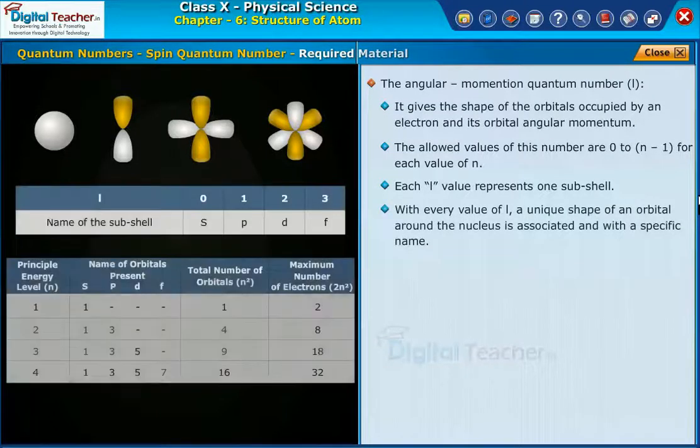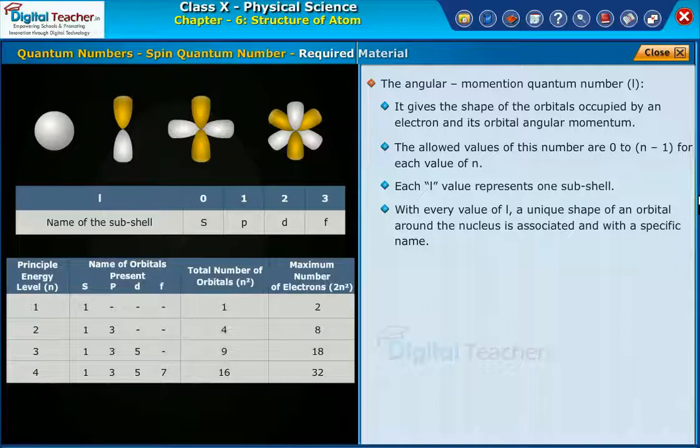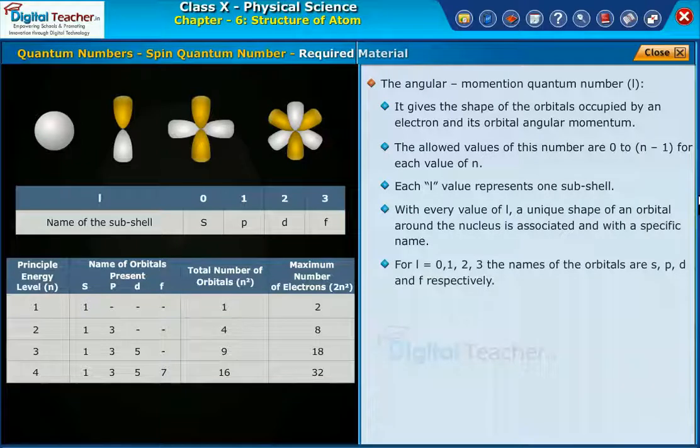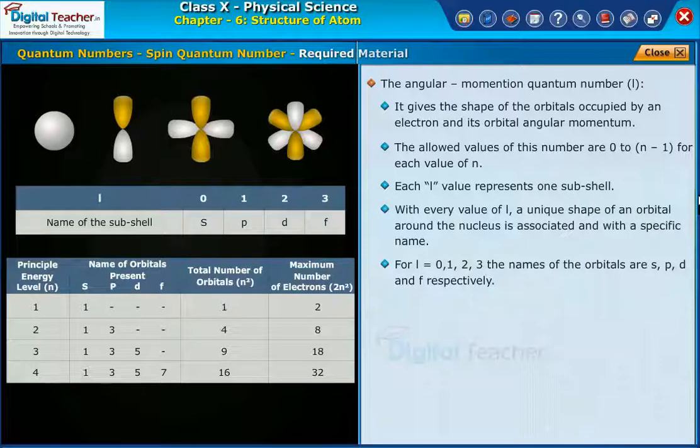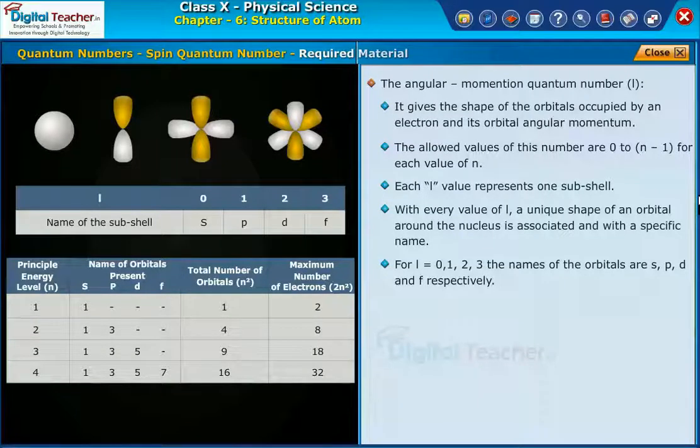With every value of l, a unique shape of an orbital around the nucleus is associated and with a specific name. For l is equal to 0, 1, 2, 3, the names of the orbitals are s, p, d and f respectively.